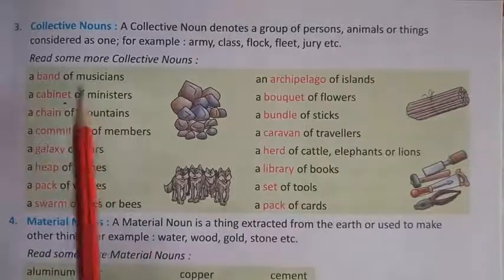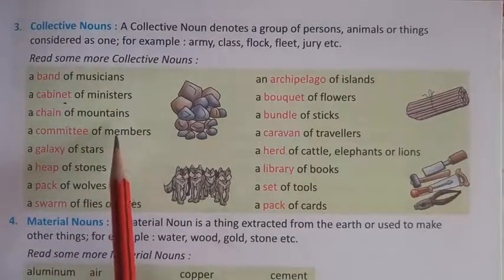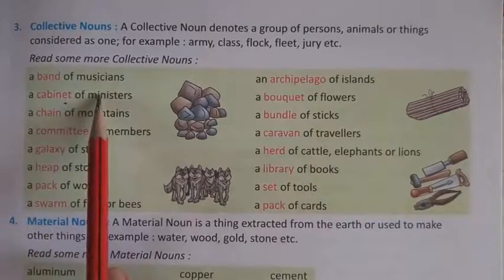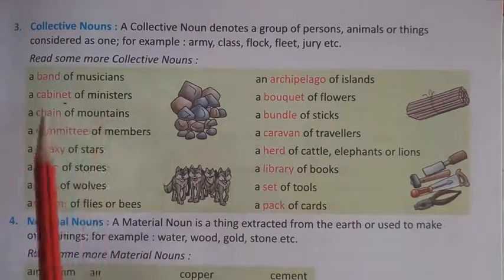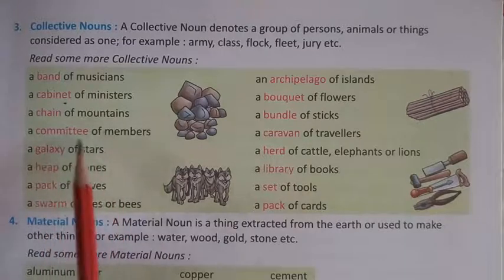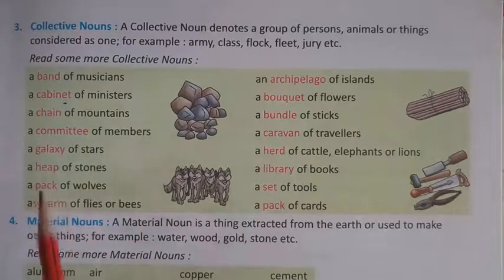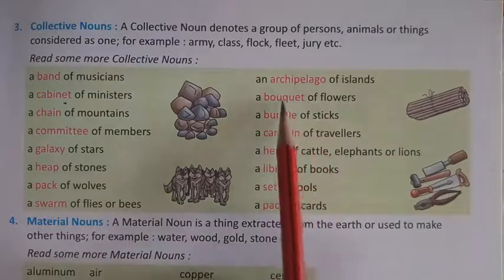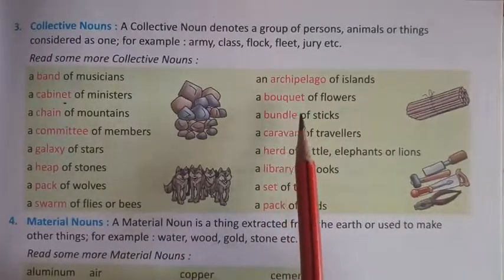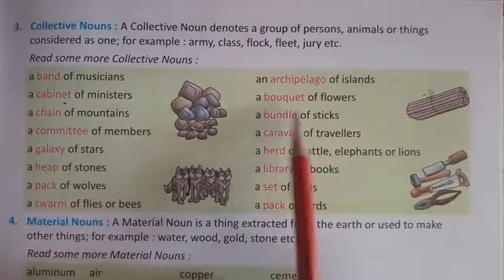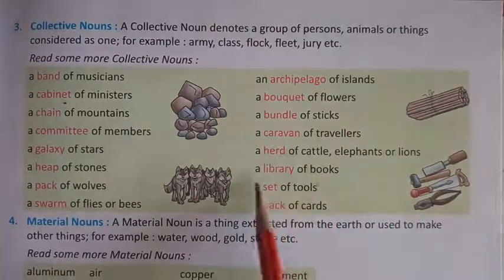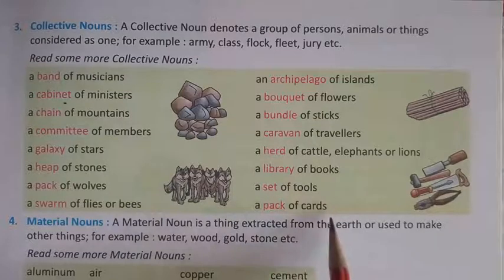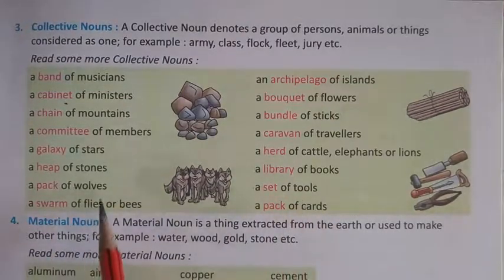Read some more collective nouns. इस तरह से collective noun को पढ़कर आपको समझ आएगा. Just like: a band of musicians, a cabinet of ministers, a chain of mountains, a committee of members, a galaxy of stars, a heap of stones, a pack of wolves, a swarm of flies or bees, an archipelago of islands, a bouquet of flowers, a bundle of sticks, a herd of cattle/elephants/lions, a library of books, a set of tools, a pack of cars.